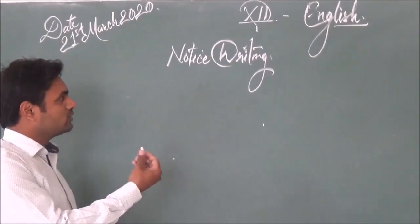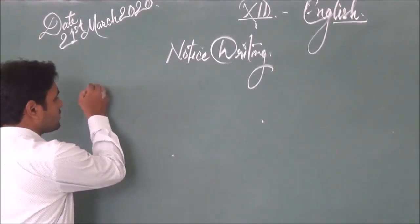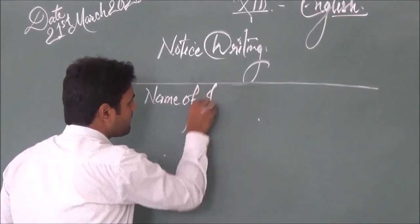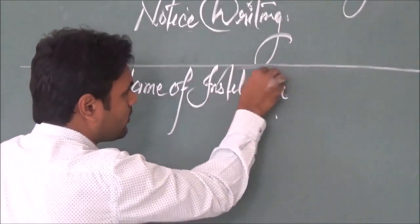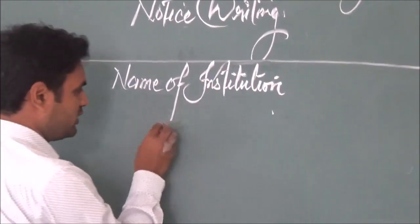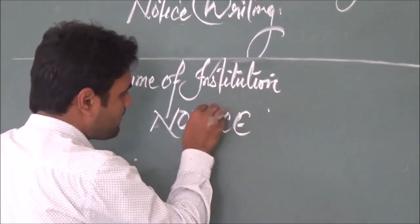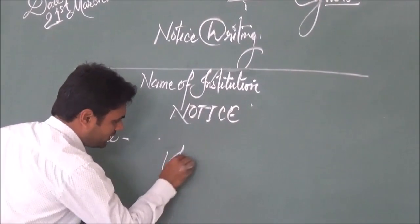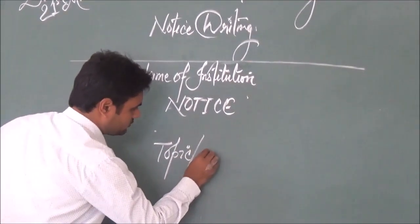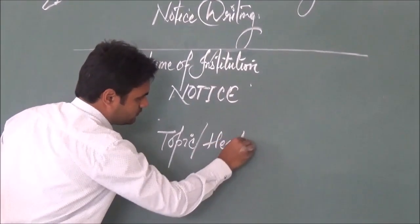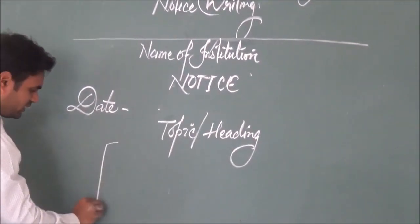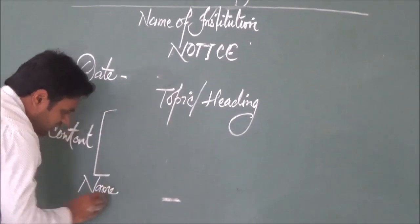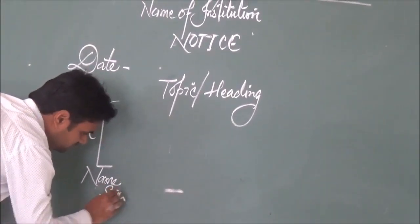Let me tell you about the format of notice writing. First of all, we write the name of the institution, then after that we write 'Notice', then the date, next the topic or heading, then the content of the notice, and at last the name of the issuer, along with signature and designation.